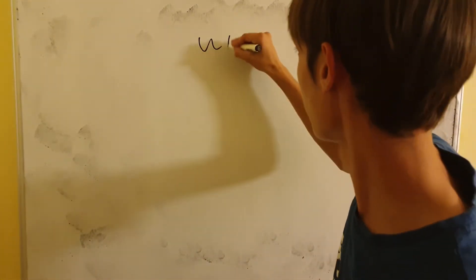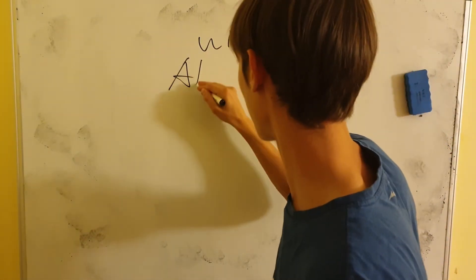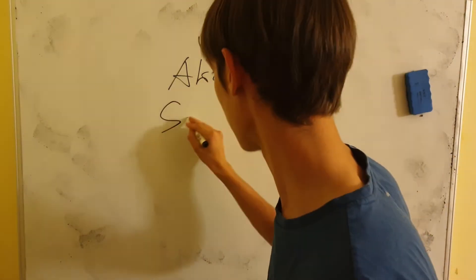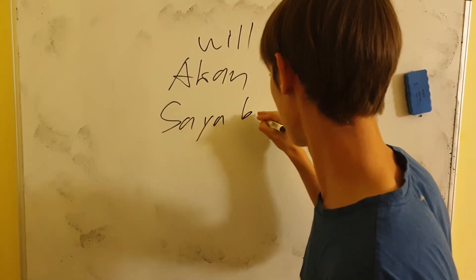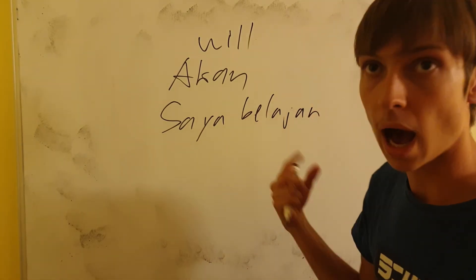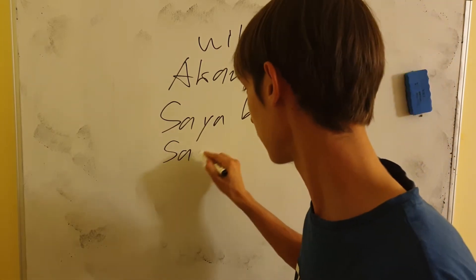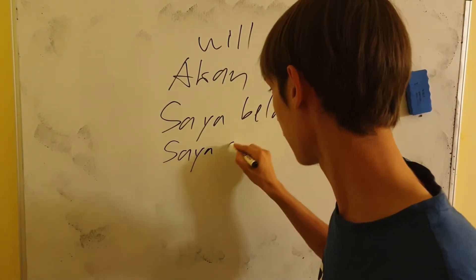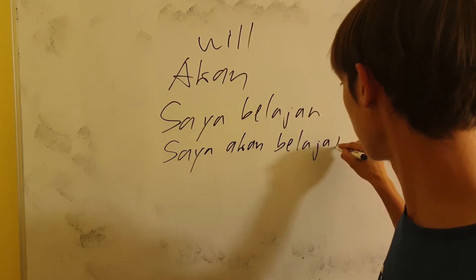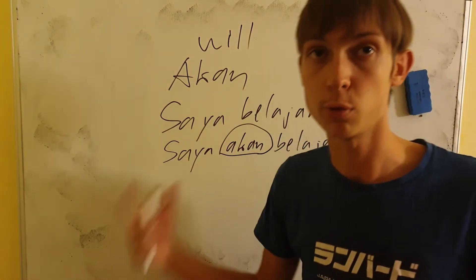How to say 'will' in Indonesian — future tense. Just use the word 'akan'. 'Akan' means 'will'. So 'saya belajar' is 'I learn', but to say 'I will learn', you say 'saya akan belajar'. You just insert 'akan' and that makes it future tense.